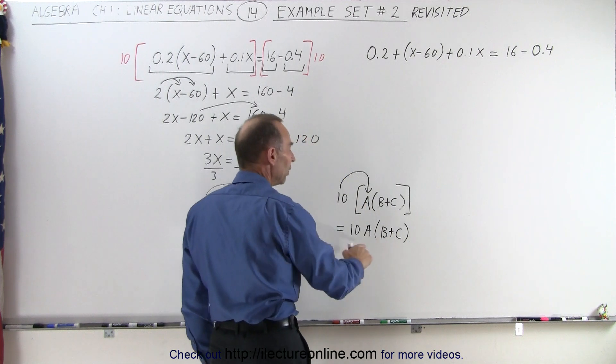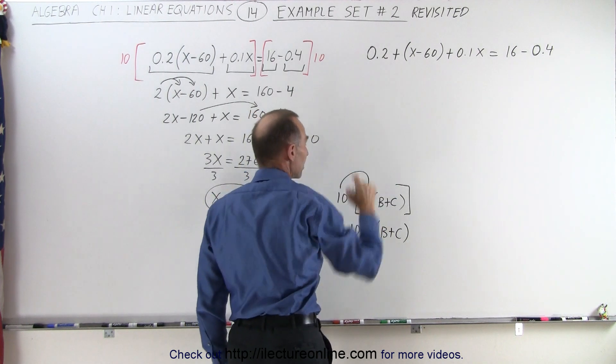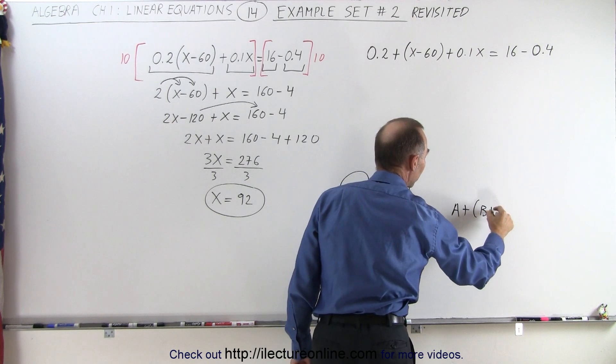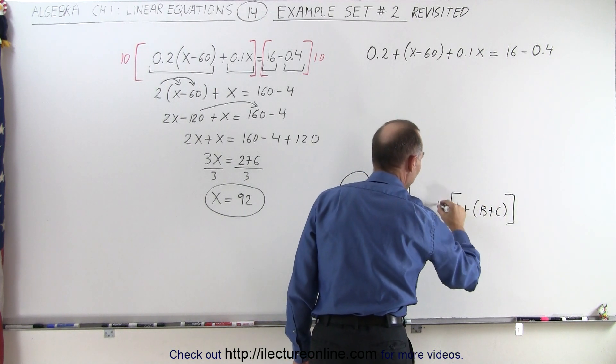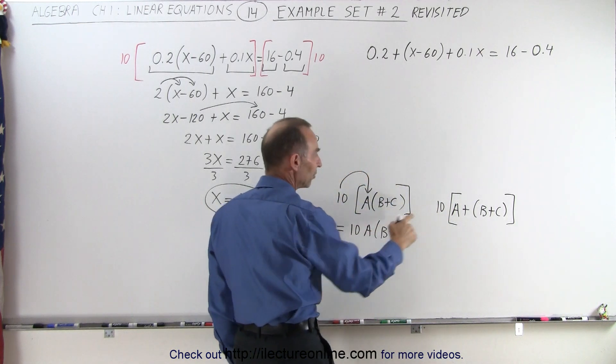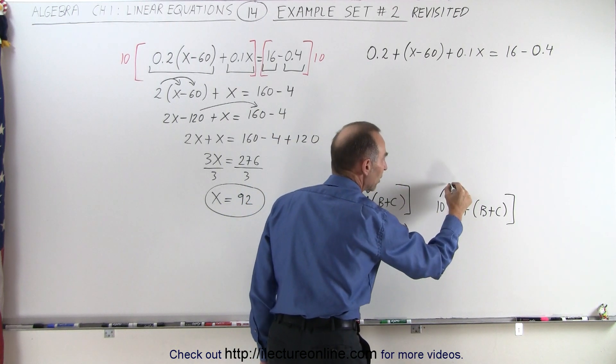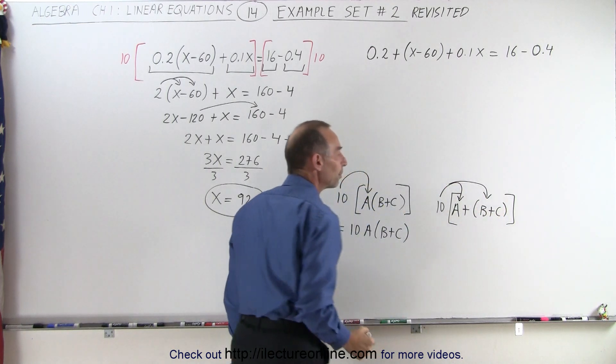But if instead we had it written the way we have it over here where it's a plus the quantity b plus c and now I multiply that times 10, notice in this case the 10 would have to be multiplied times a because there's a plus sign here and also multiplied times the b plus c.